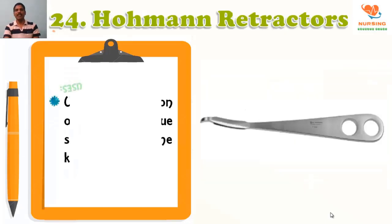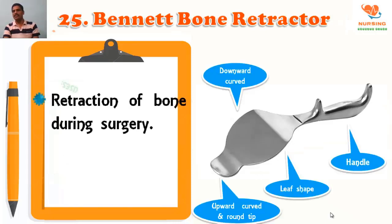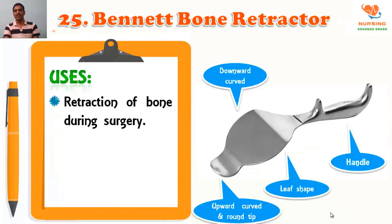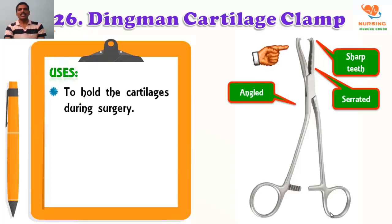Hohmann retractor is used for retraction of the soft tissue structure near the knee and can be utilized in a variety of knee surgical procedures. Binet bone retractor is used for retraction of the bone during surgery. On the picture you can see the parts: a handle, leaf-shaped spoon-like structure, downward curve, upward curve, and round tip at the edge.